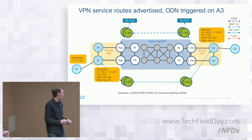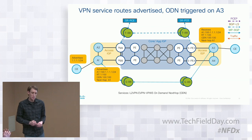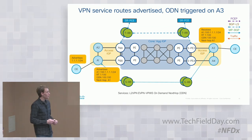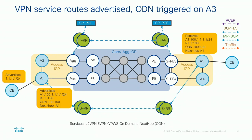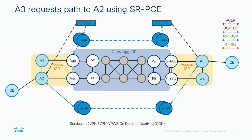The difference you'll notice is the ODN tag — a specific community that tells the far-end node to compute a path using the SRPCE to the other node. The A2 node, once it receives a route with that specific ODN tag, instructs the SRPCE that it needs a path to that far-end next hop. SRPCE returns that path over PCEP, which is completely standardized — the SR extensions to PCEP are being standardized. We've done interop tests with other vendors on SRPCE. It's all open, all IETF standards-based.